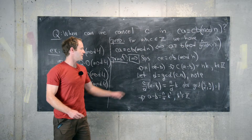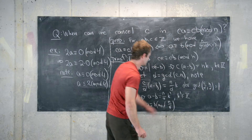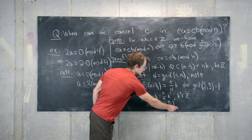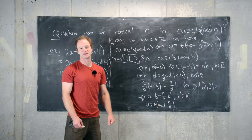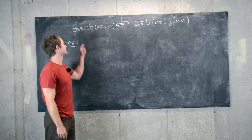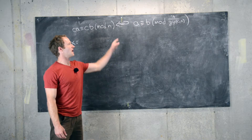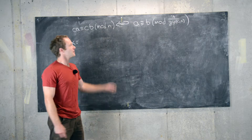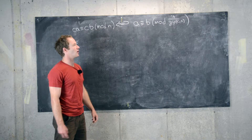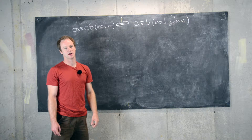That means A is congruent to B mod N over D, and since D is the GCD of C and N, we've ended up with the right-hand side of this equivalence. The reverse direction is a bit simpler and would be a nice exercise, so we'll finish the proof there. So we've proven that CA is congruent to CB modulo N if and only if A is congruent to B modulo N over the GCD of C and N. Sometimes we can cancel C, but only if the GCD of C and N is 1 — then we can straight cancel C with no problems. Otherwise, we can cancel C but we have to change what our equivalence is with respect to.